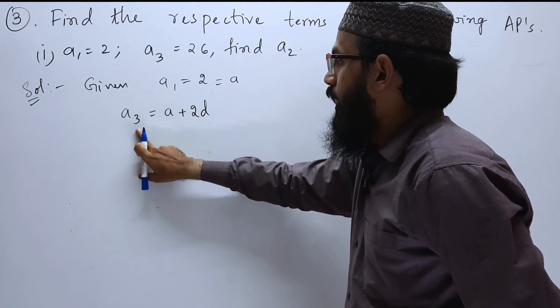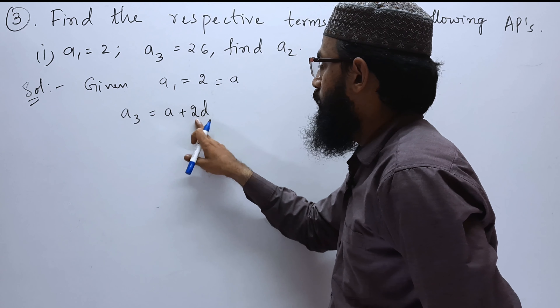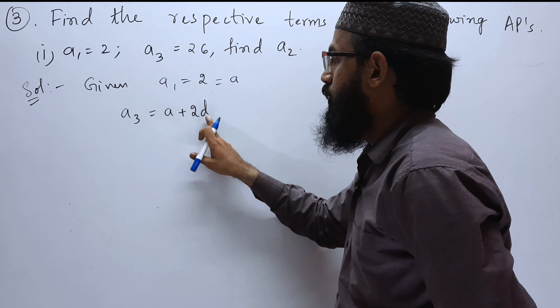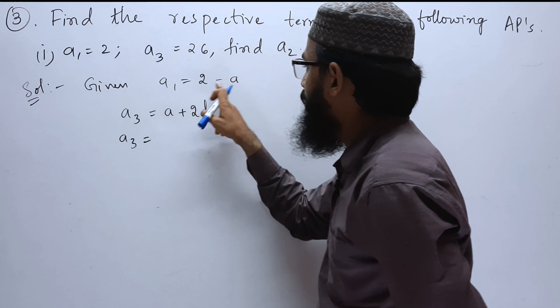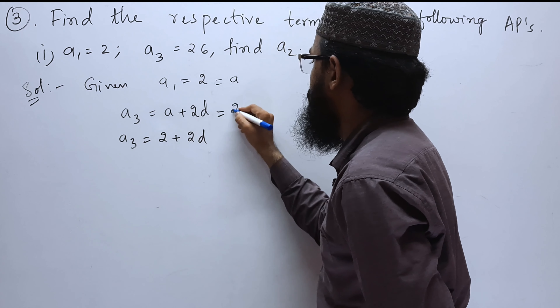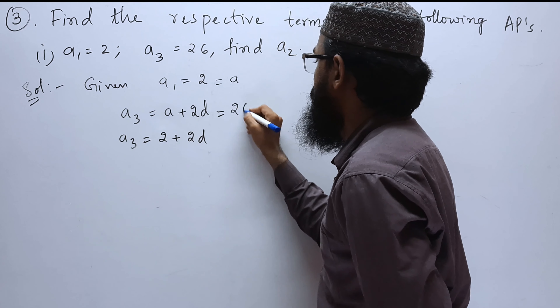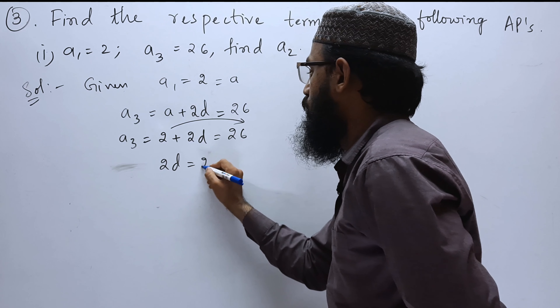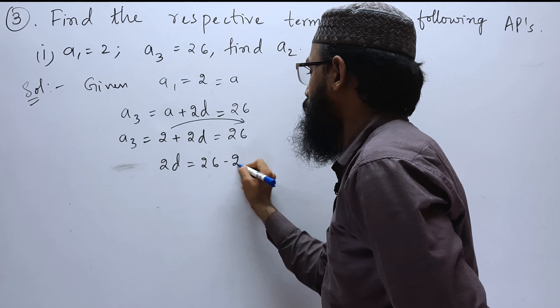Whatever number is in the position, we subtract 1 to get the D coefficient. Like A5 is A plus 4D. Now A3 equals 2 plus 2D, and A3 is 26. So 2 plus 2D equals 26, which gives 2D equals 24, therefore D equals 12.